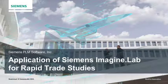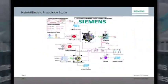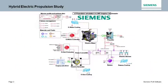Welcome to this 5-minute video on the application of Siemens ImagineLab for rapid trade studies. In this video we demonstrate an example of rapid modeling of a hybrid electric propulsion system to study the effects of generator efficiency against certain failure modes.